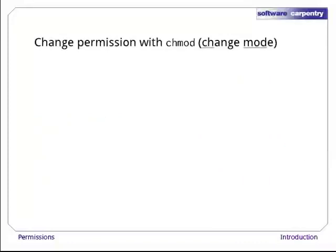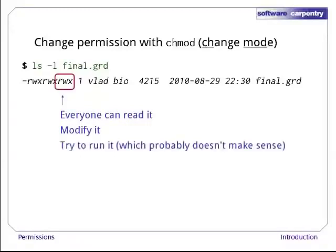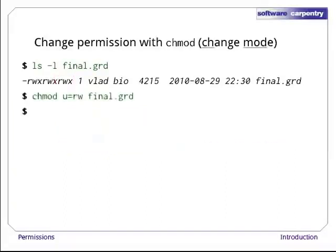So much for looking at permissions. If we want to change them, we use the chmod command. The name stands for change mode. Here's a long-form listing showing the permissions on the final grades in the course vlad is teaching. Whoops — everyone in the world can read it, and what's worse, modify it. A crafty student could go in and change his or her grade. Here's the command to change the owner's permissions to rw-. The u signals that we're changing the privileges of the user, i.e., the file's owner. And rw is the new set of permissions.